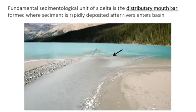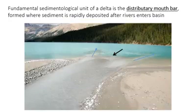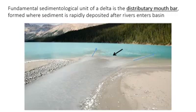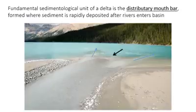The main depositional element in the delta plain is something called the distributary mouth bar — a bar that forms at the mouth of the distributary channel. The physics of these mouth bar formations depends on the density contrast of the water, frictional interactions, and fluvial discharge. There are actually different types of distributary mouth bars, but the key feature of any distributary mouth bar is the rapid deposition of large amounts of sediment.